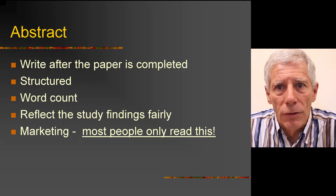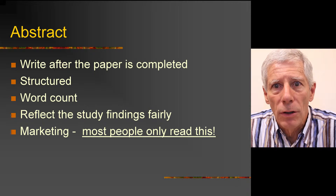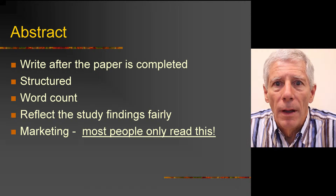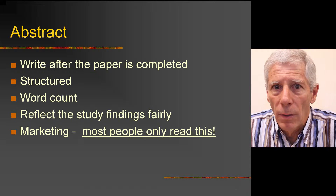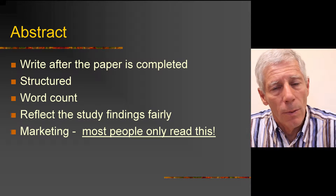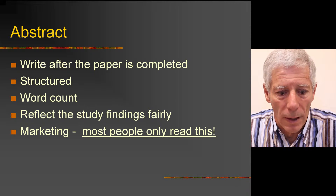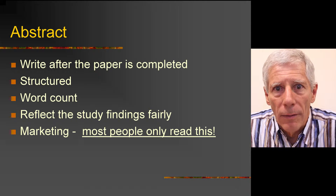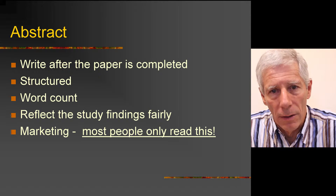Note from the guidelines of the journal how the abstract is to be set out. They'll usually have it structured and they'll have specific headings. Please use the exact headings that the journal mentions — it's very important. They will make you change it if you don't. Also be very careful about the word count. If they say 250 words and you have 251, you will not be able to submit the abstract. Be careful not to make more of the article in the abstract than was actually justified by the article itself.